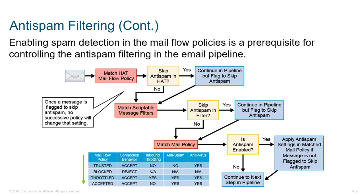Taking a look at the mail flow: we enable spam detection and look at traffic coming in. The first thing we do is match our HAT policy, then go - should we skip the anti-spam based on the HAT? If it's known good, if it's coming from our partner, maybe we do. This gets passed through the pipeline, and then we check: should we pass anti-spam? Yes, but continue in the pipeline. It skips it, comes over, is anti-spam enabled? Yes - apply anti-spam settings to this match policy. This is an example of anti-spam, but it could be any of the intermediate filters we talked about.